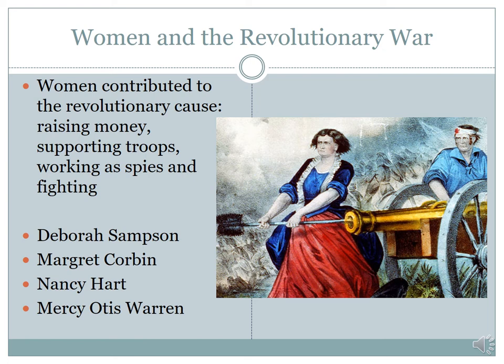Now we're going to talk about women and the Revolutionary War. I've already talked about women in their capacity as camp followers — as nurses, cooks, and launderers, supporting the troops. But some went a step further, working as spies or actually fighting in the Revolutionary War. Probably the most famous of these women was Deborah Sampson. She disguised herself as a man to serve in the war, serving for 17 months under the name Robert Shirtleth. She was eventually wounded and her gender identity was discovered by the doctor, who kept it a secret so that she could be honorably discharged. Eventually, she received a war pension for her service in the Revolutionary Army.